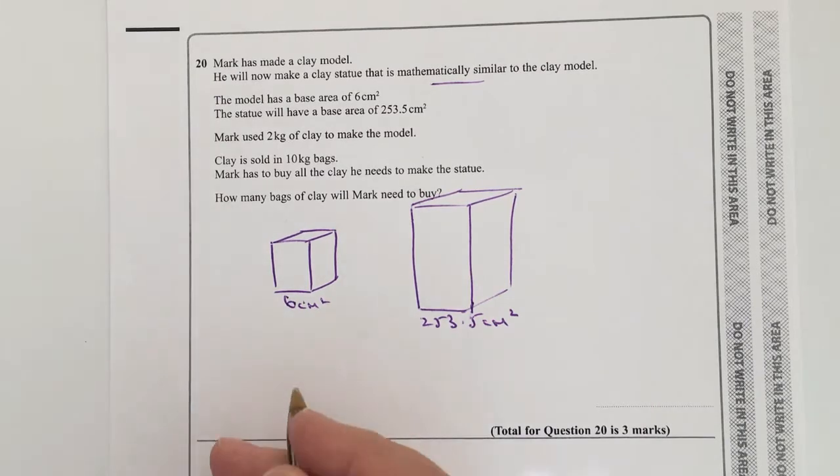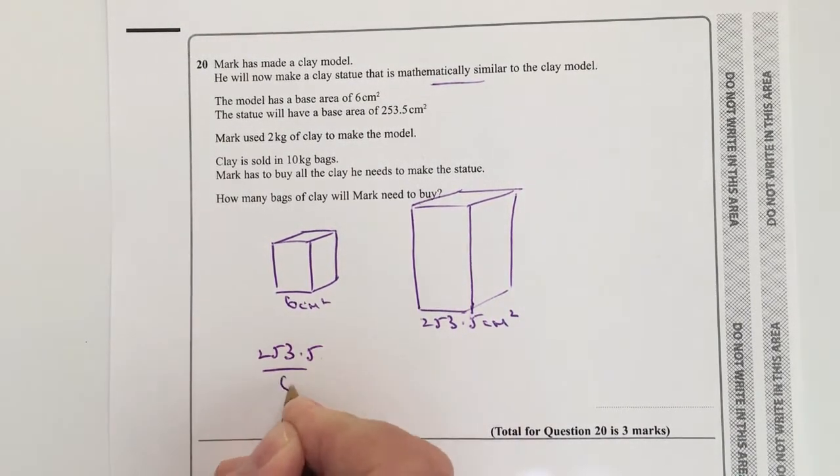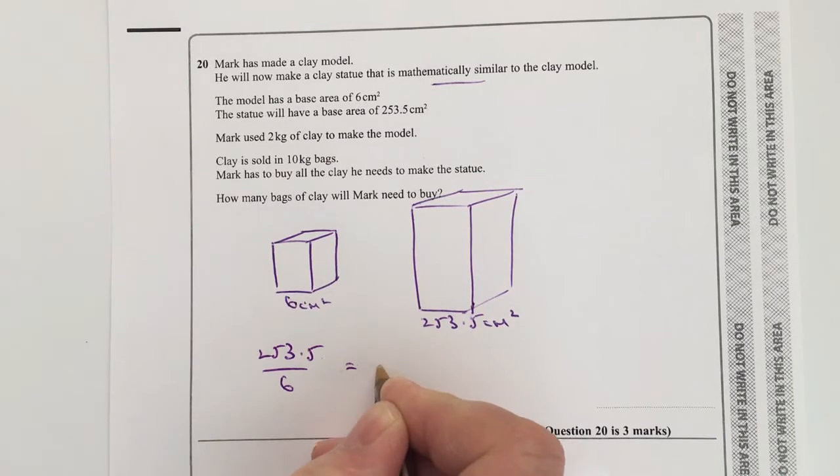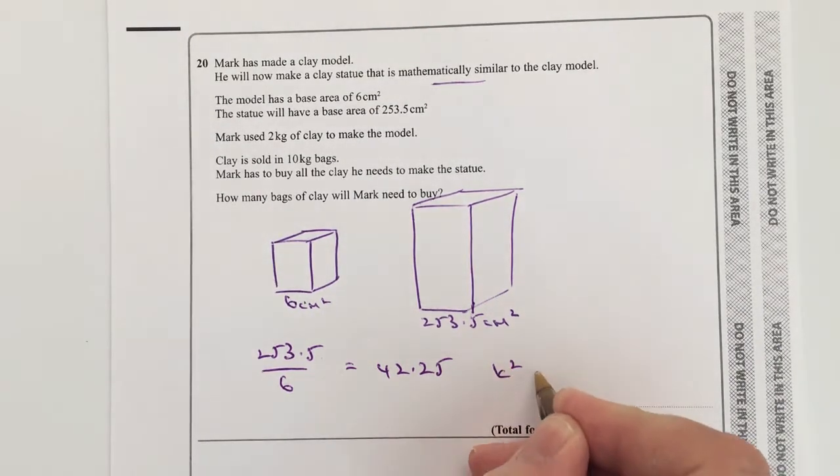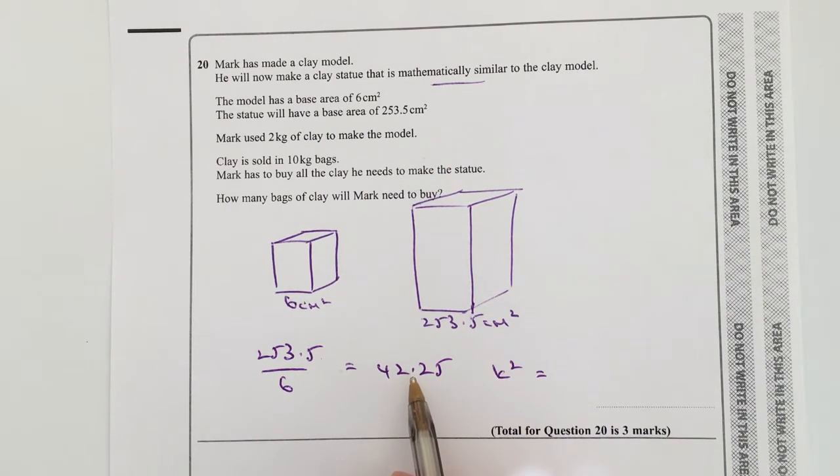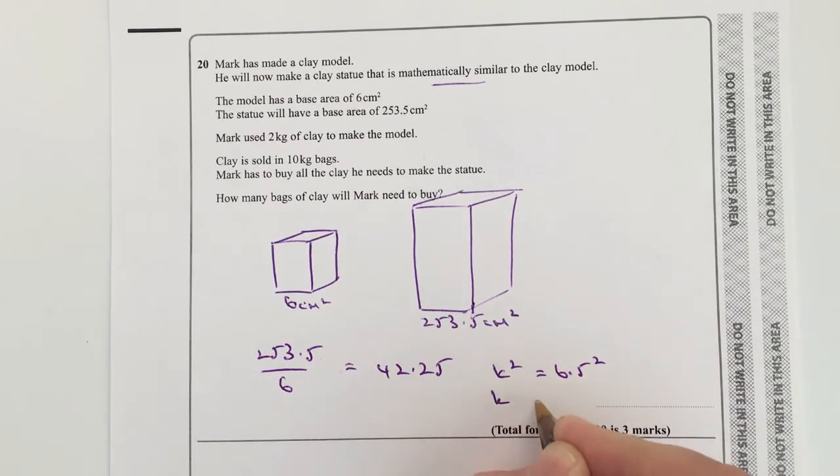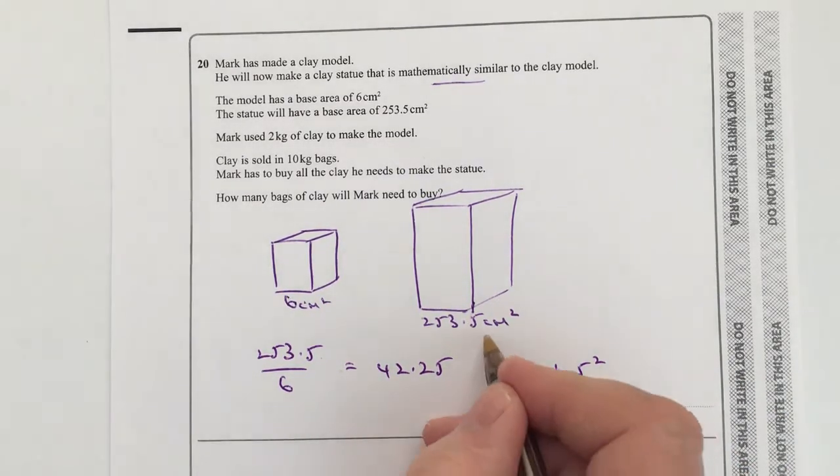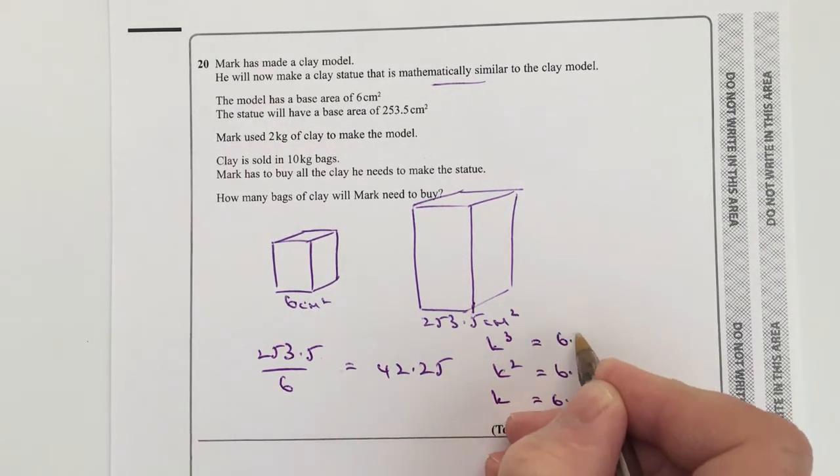Now in this particular case, if I divide 253.5 by 6, what I'm actually going to get is 42.25. Now that's exactly the same as saying k squared. So if it's k squared and I square root it, I'm going to get a constant of 6.5. And then if I cube it, I'm going to get a constant of 6.5 cubed.